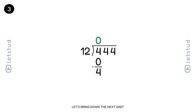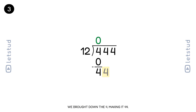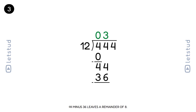Let's bring down the next digit. Now we have 44. How many times does 12 fit into 44? It fits 3 times. We brought down the 4, making it 44. 12 fits into 44 3 times. 3 times 12 is 36. 44 minus 36 leaves a remainder of 8.